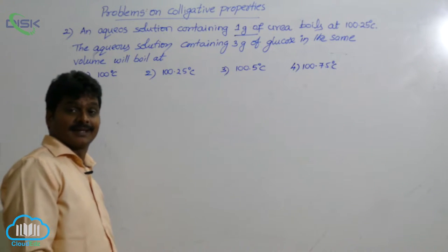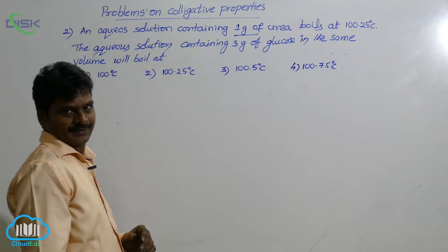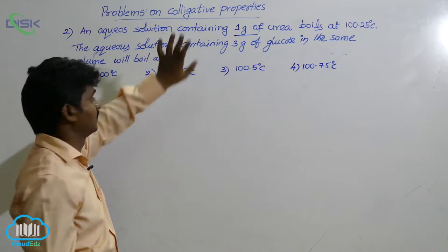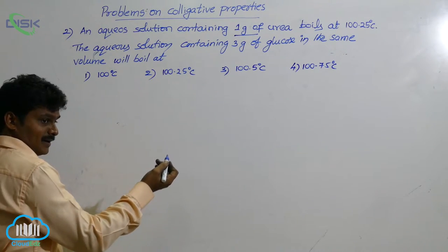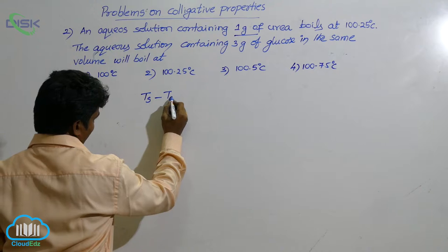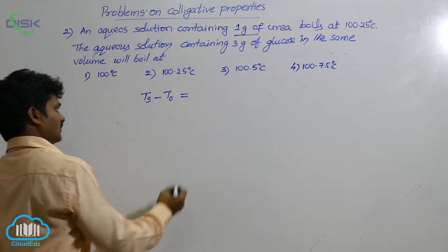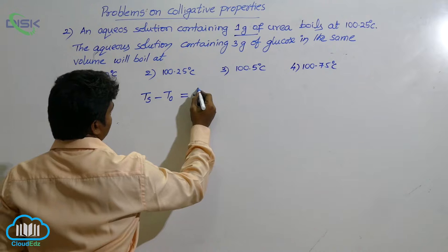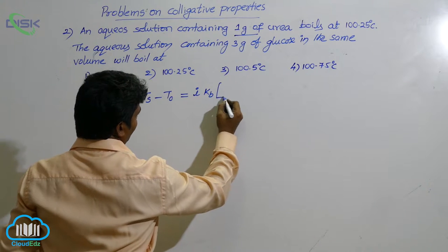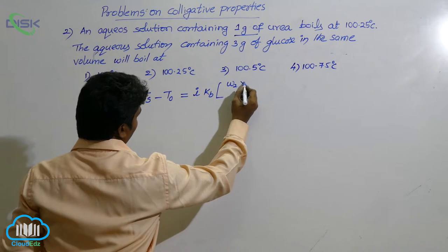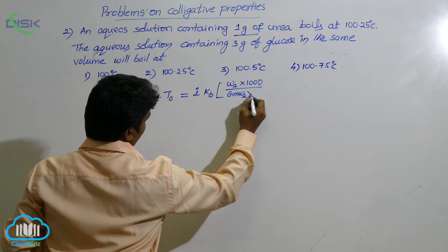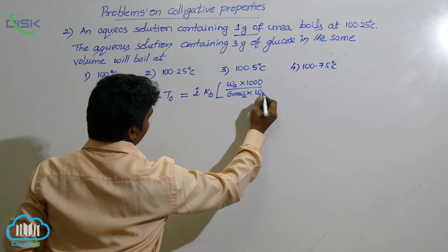For that, here one term is missing. What is that? KB. KB value is not given, so using the first solution, let us find out the KB. What is the standard relation for elevation in the boiling point? We have a formula: Ts minus T naught equals to Van't Hoff factor i into KB into molality. Molality, how to write? Weight of solute into 1000 by gram molecular weight of solute into its weight in grams.